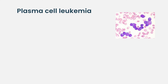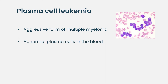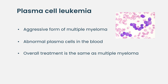Plasma cell leukemia is a term that refers to a particularly aggressive form of multiple myeloma, where the myeloma cells, instead of staying in the bone marrow where they usually live, develop the ability to leave the bone marrow and come out into the blood. If there are a lot of plasma cells in the blood, then we call it plasma cell leukemia. Although the overall treatment remains the same as for multiple myeloma, meaning we give medicines to kill the plasma cells and try to bring them under control and stop them from causing problems.